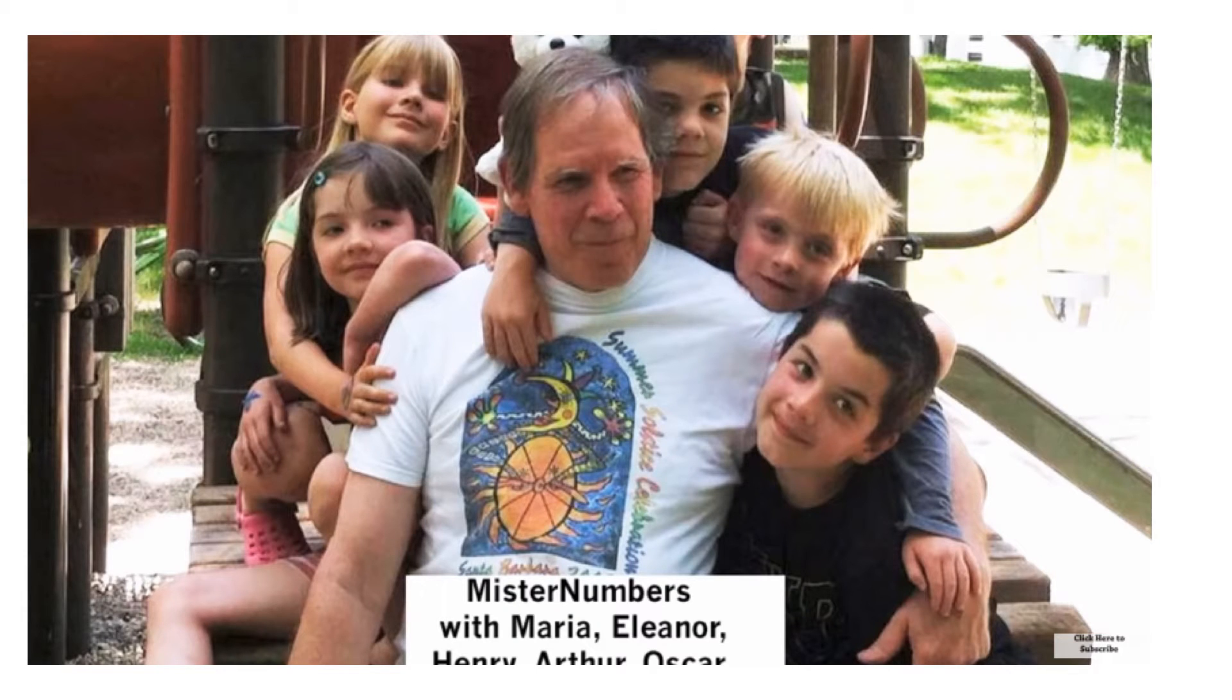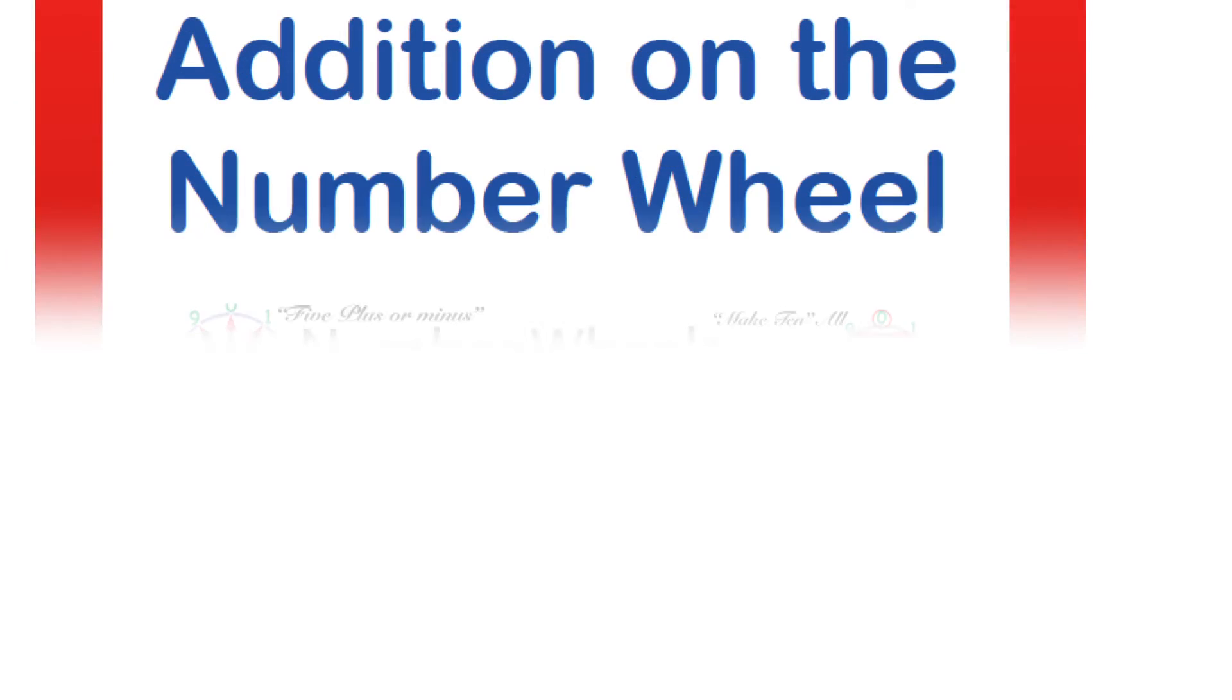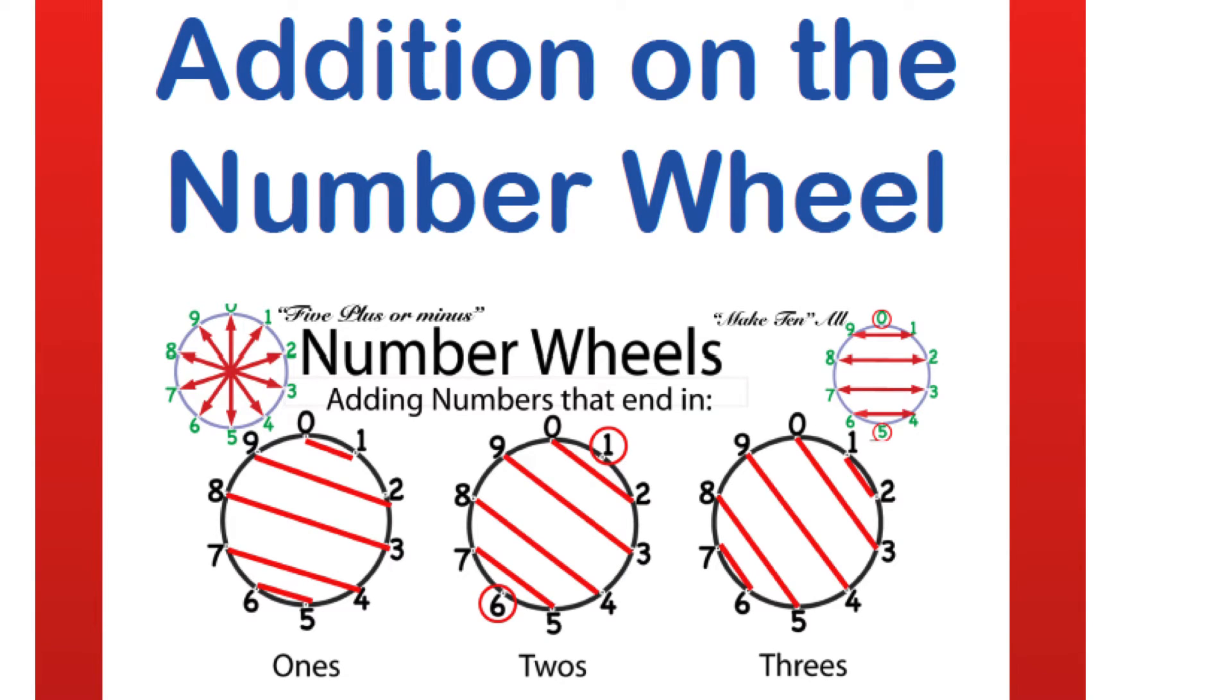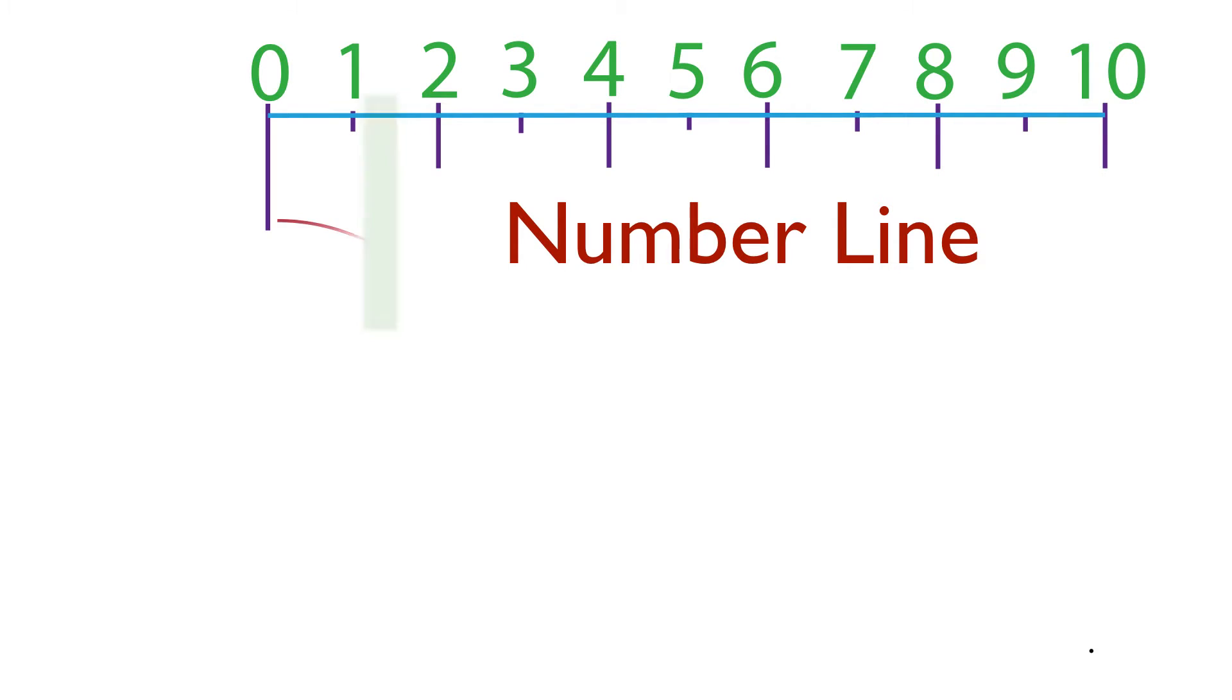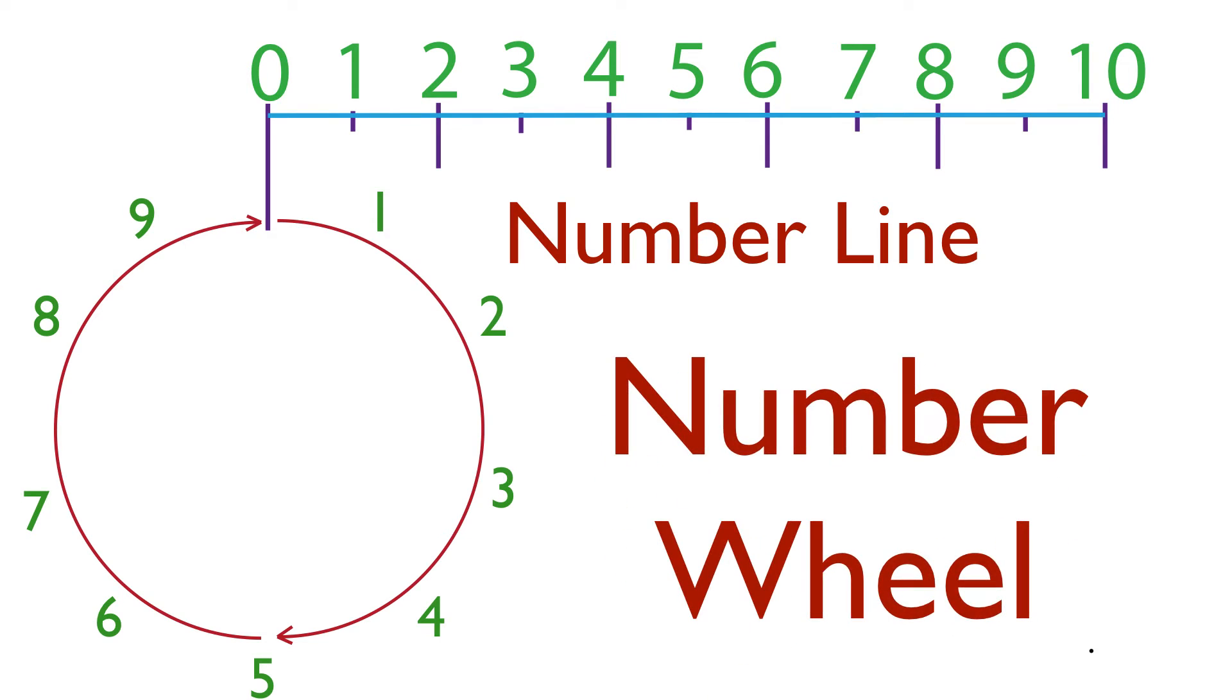I'm Tom Bezantz, also known as Mr. Numbers, and we're continuing our adventures with addition on the amazing number wheel, which is a number line to 10 wrapped around in a circle with 0 on top and 5 on the bottom. Just the 10 digits.